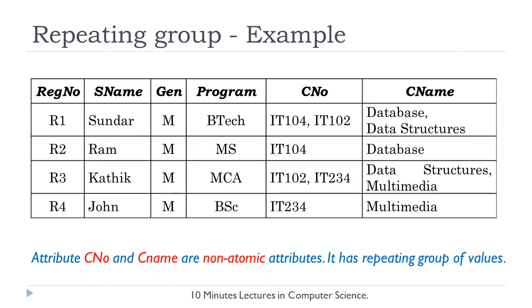In this example, both course number and course name attributes are multi-valued attributes because they have multiple values for one or more records and hence they are non-atomic. So due to this, this table is also not in first normal form.